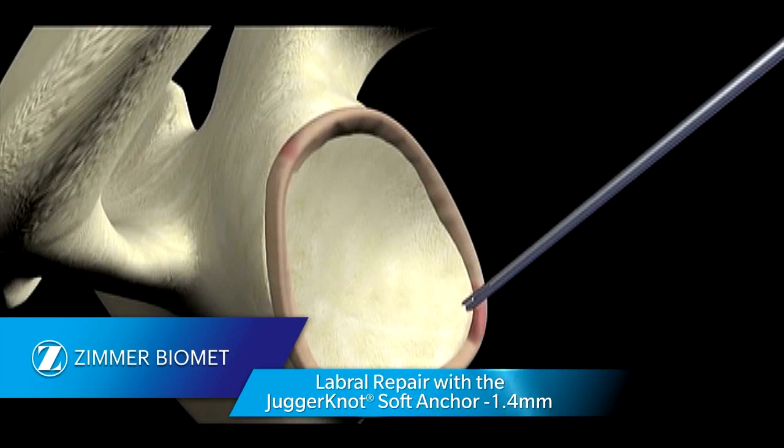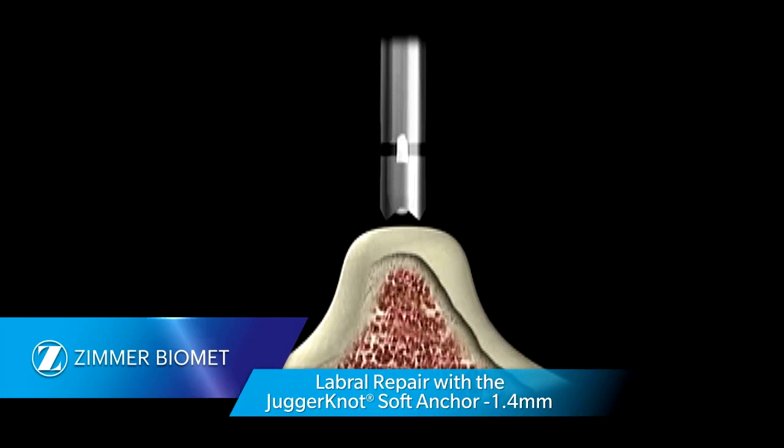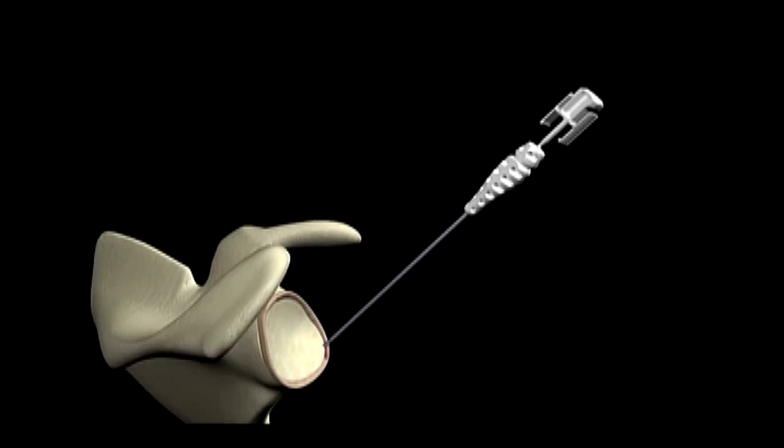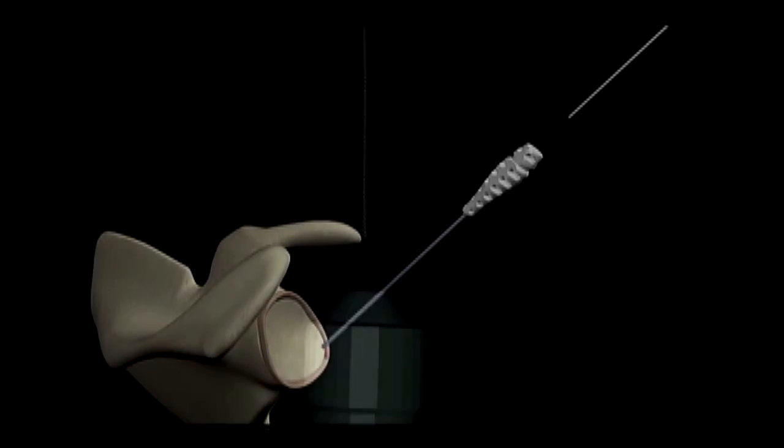Position the juggernaut guide to the desired location on the glenoid bone via a cannula or percutaneous portal. Remove the obturator from the handle of the drill guide.